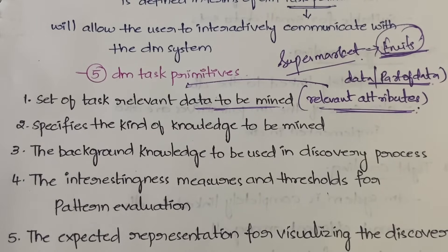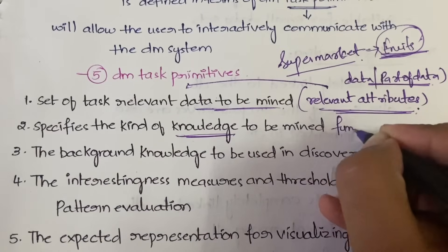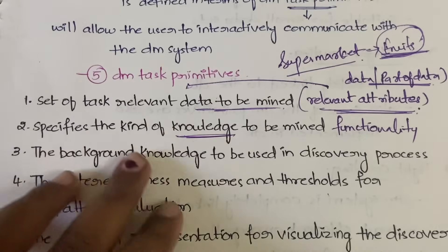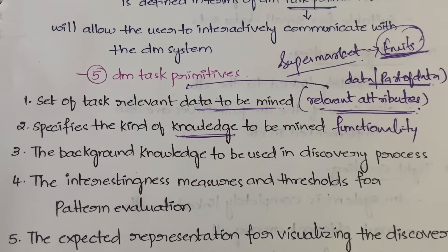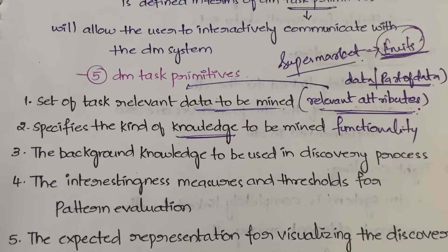The second primitive specifies the kind of knowledge to be mined. We have different types of knowledge: characterization, discrimination, association analysis, correlation analysis — all the data mining functionalities I explained previously. So this primitive specifies a kind of functionality that has to be mined — that is, whether we have to select outlier analysis or cluster analysis or whichever functionality needs to be applied.